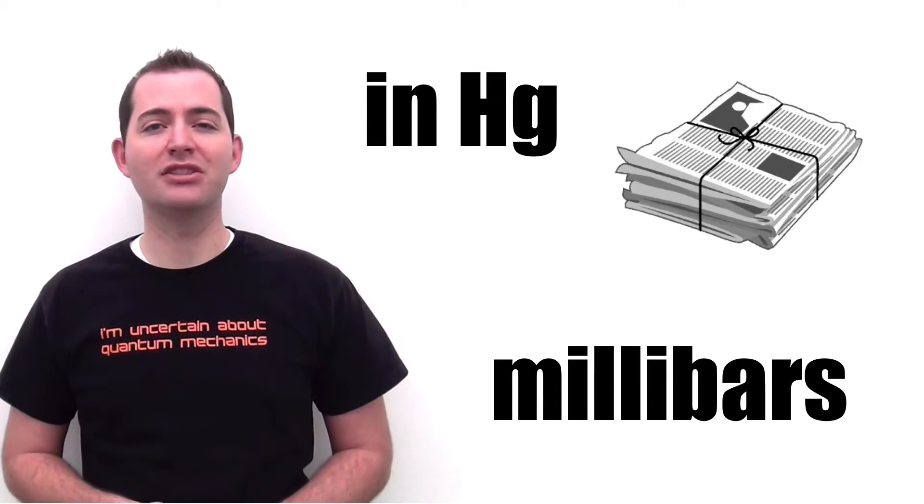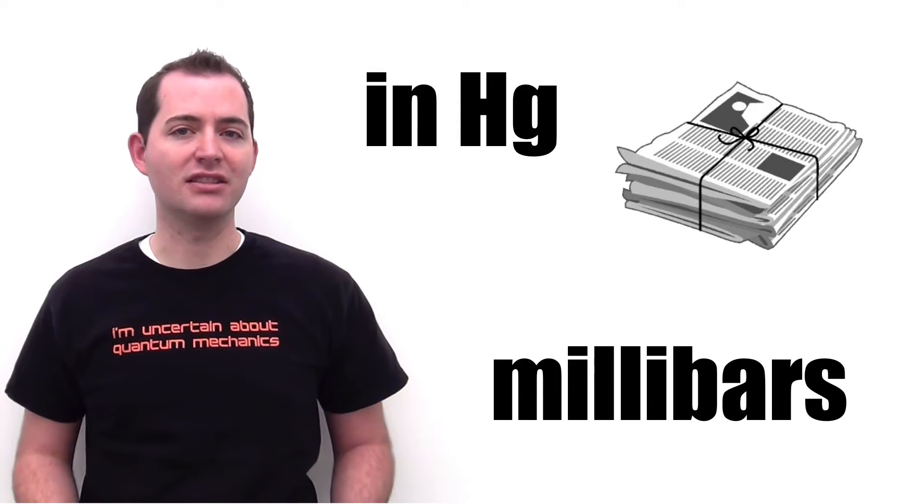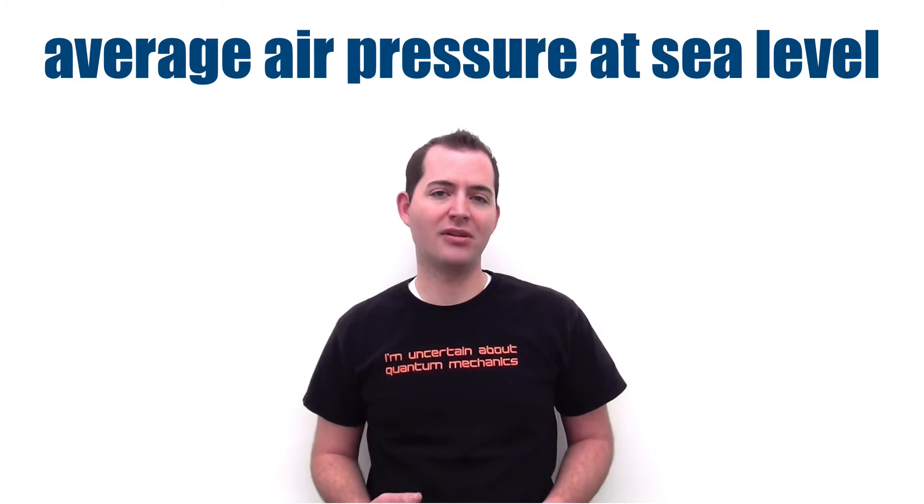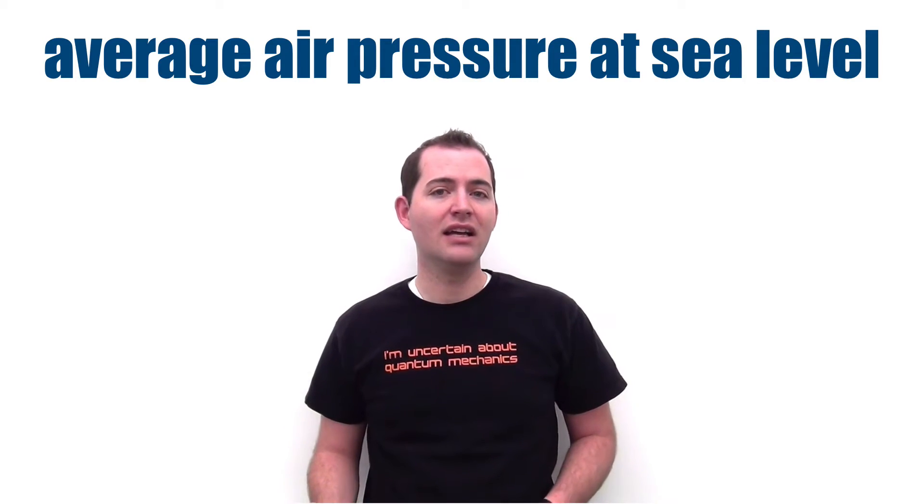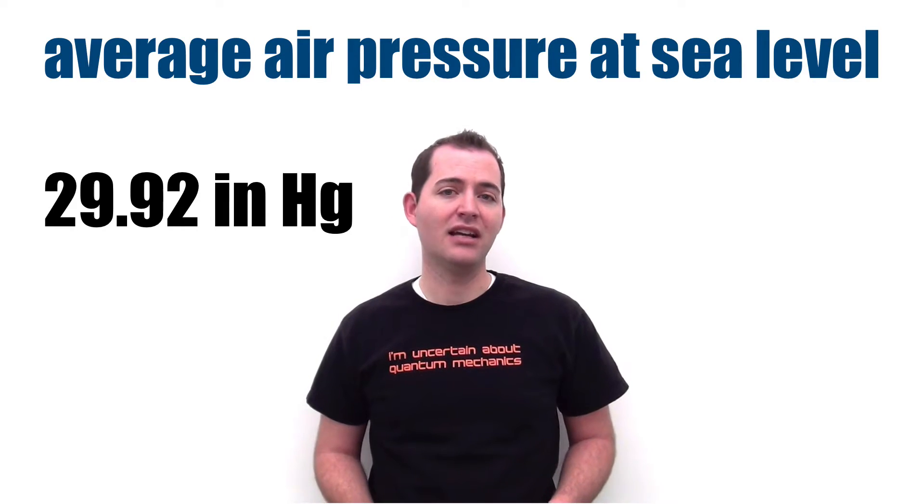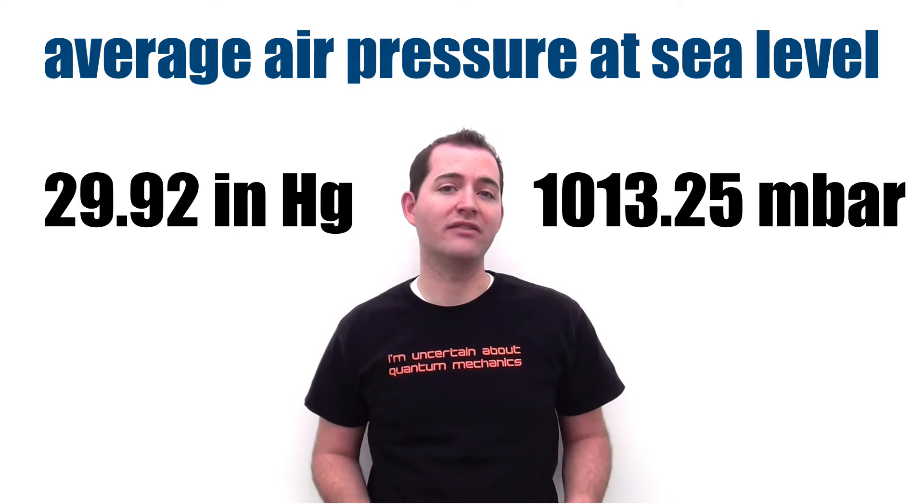Millibars is the unit of pressure most commonly used in science and by meteorologists who study the atmosphere or weather. As a comparison, the average amount of air pressure found at sea level is 29.92 inches of mercury compared to 1013.25 millibars.